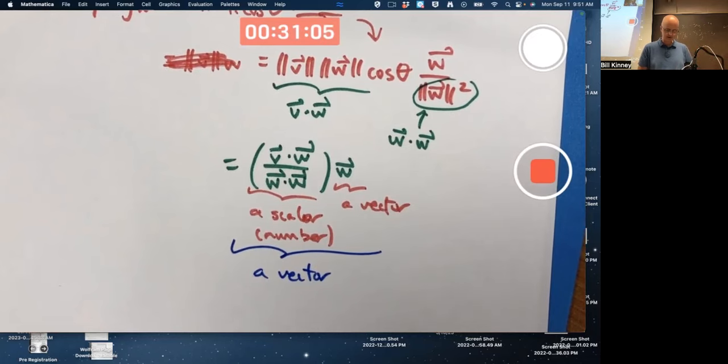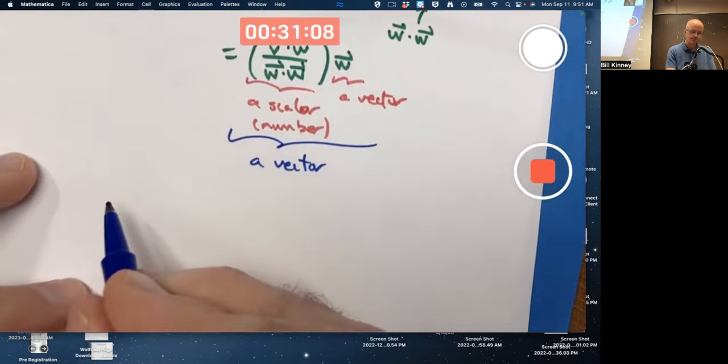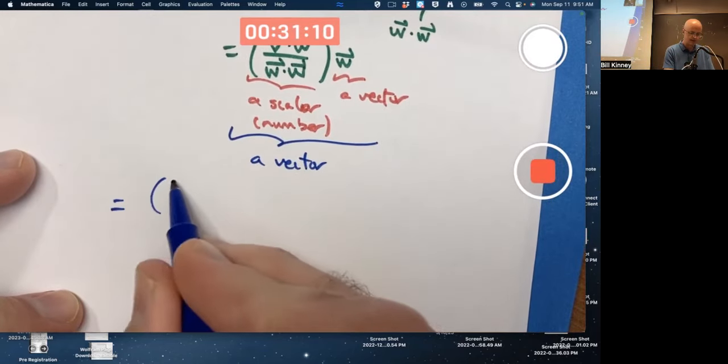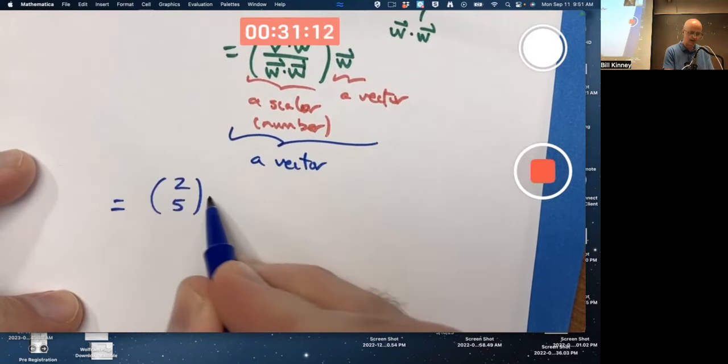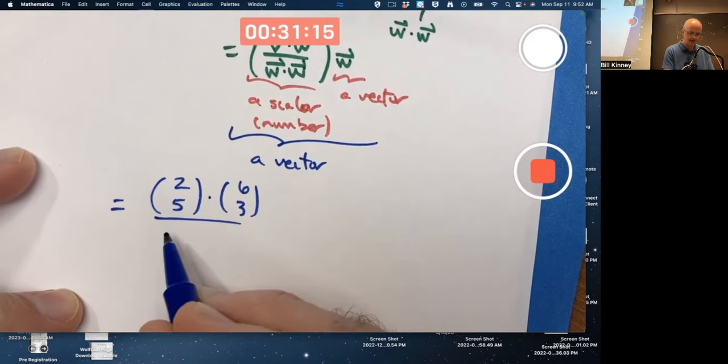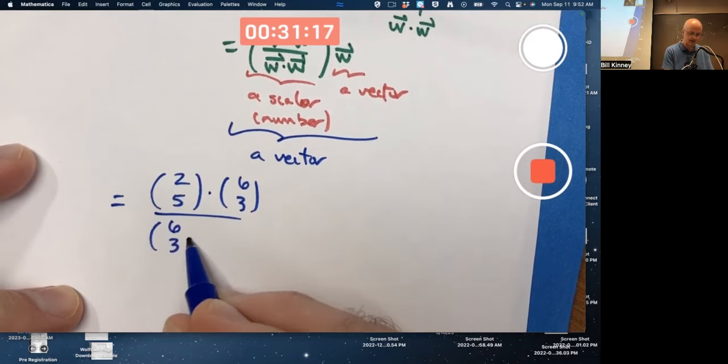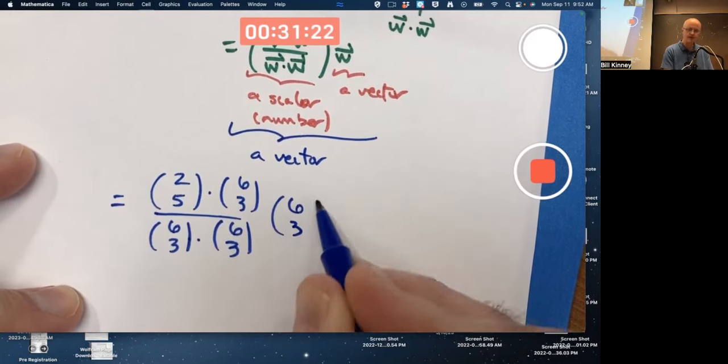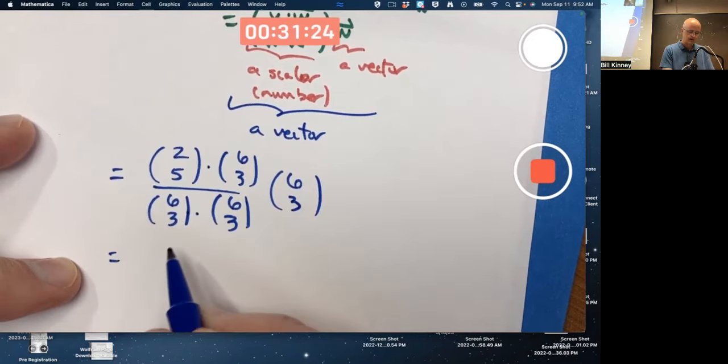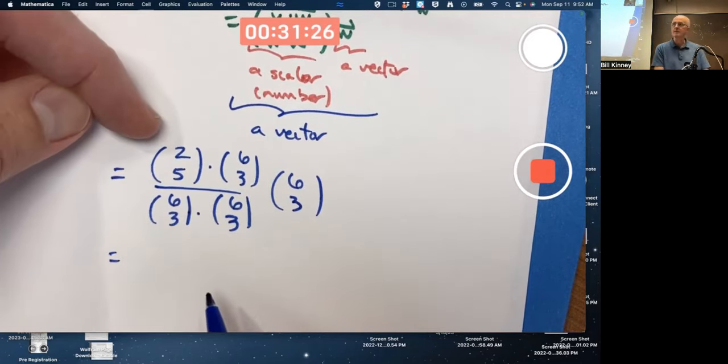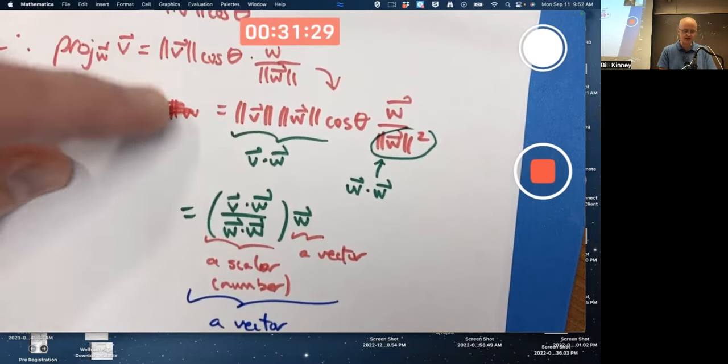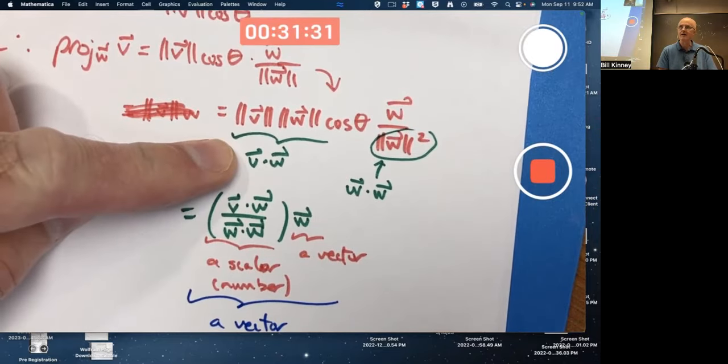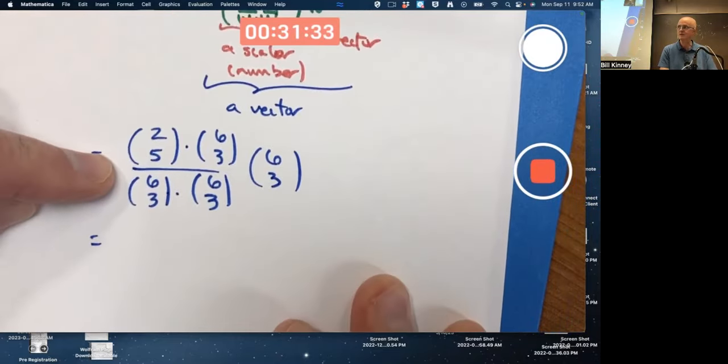What vector is it? Now we have to figure it out. V dot W is 2, 5, dot 6, 3. W dot W is 6, 3 dotted with itself. And the vector W itself is just 6, 3. We use the geometric meaning of dot product here. But down here, it's easier to use the definition of dot product in terms of the arithmetic that you do.